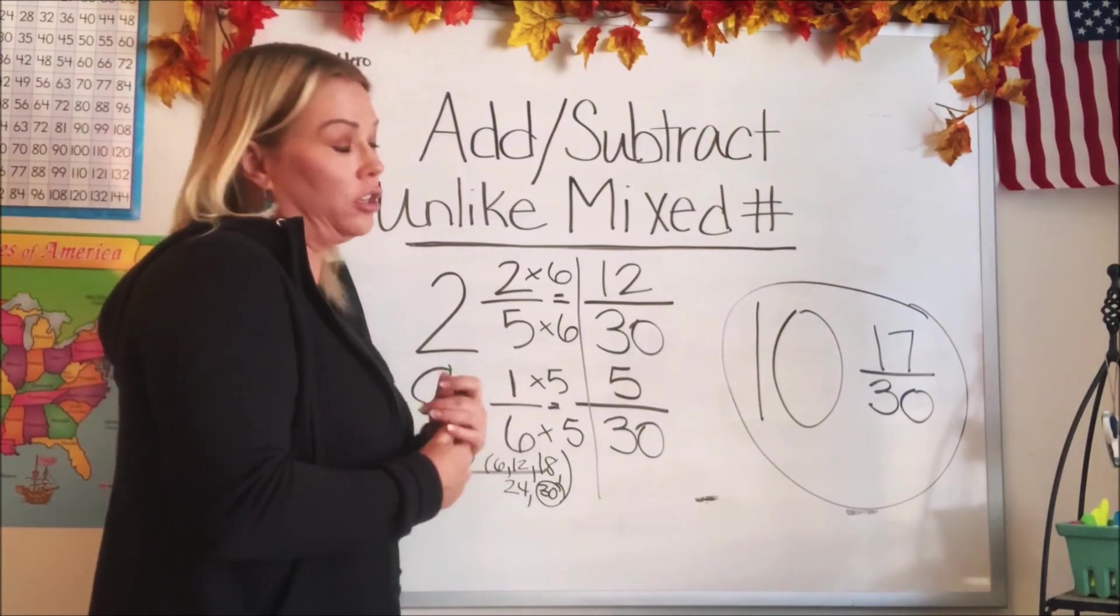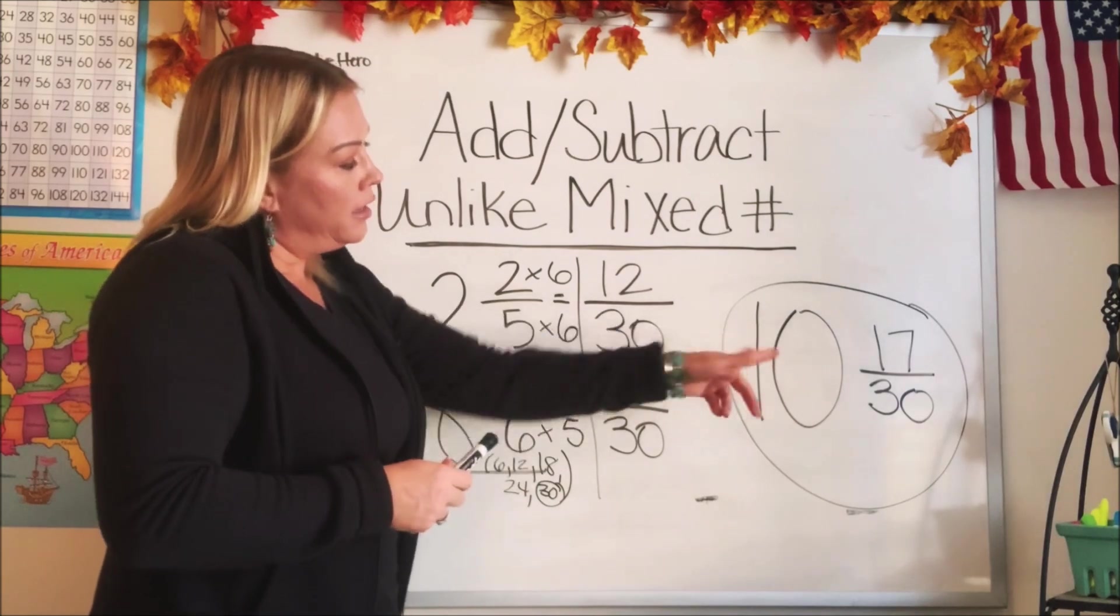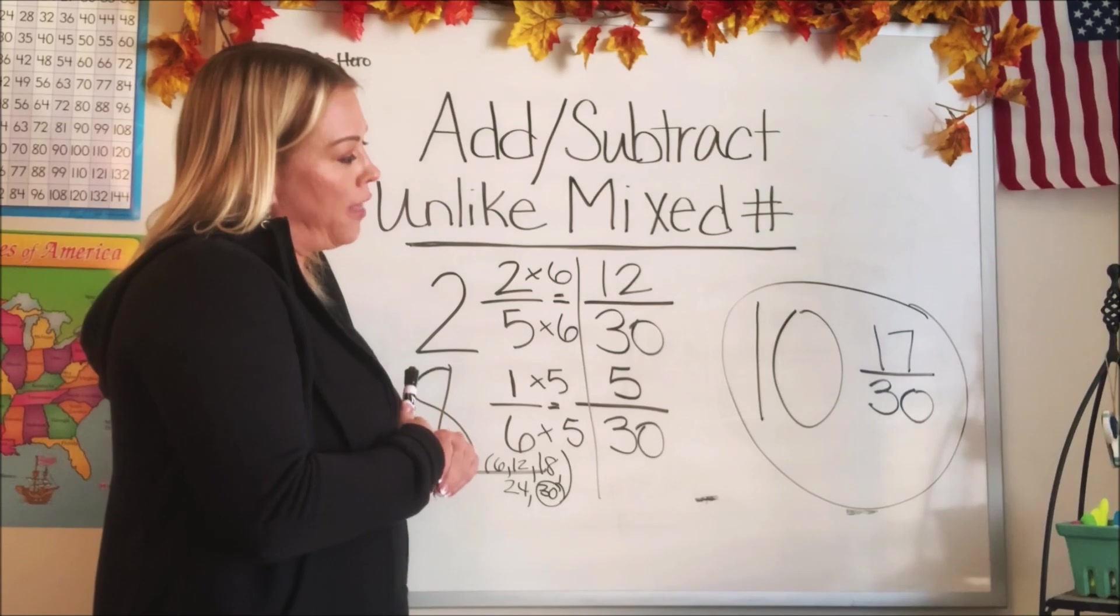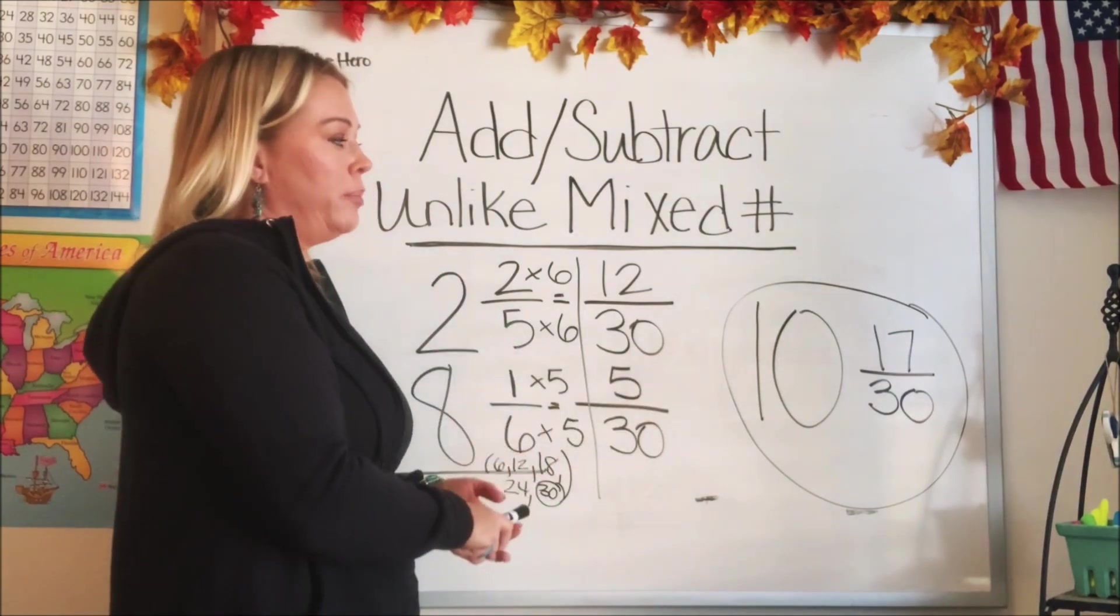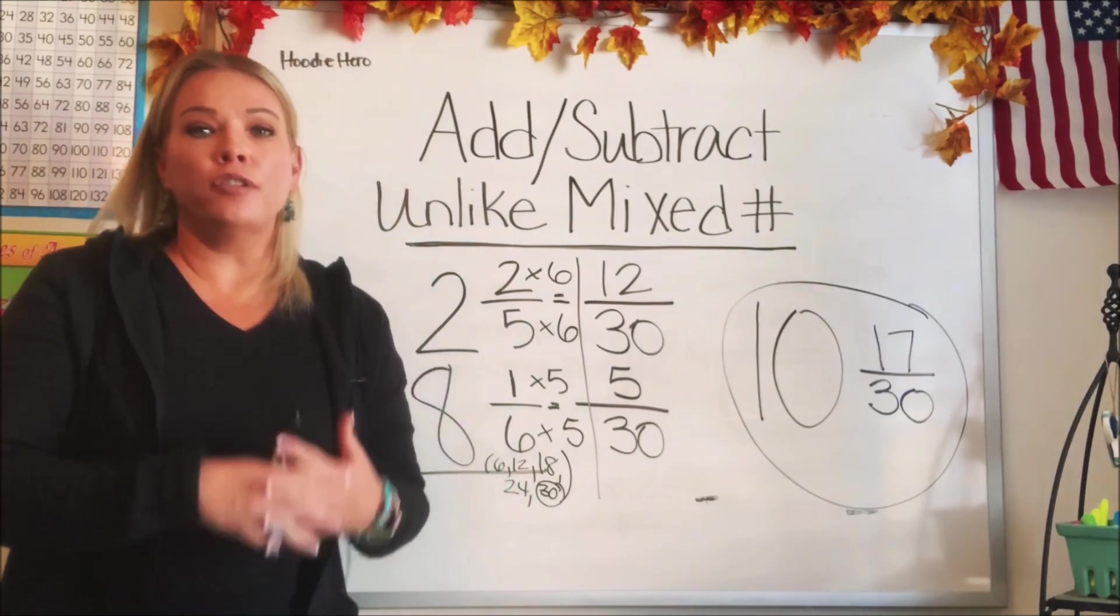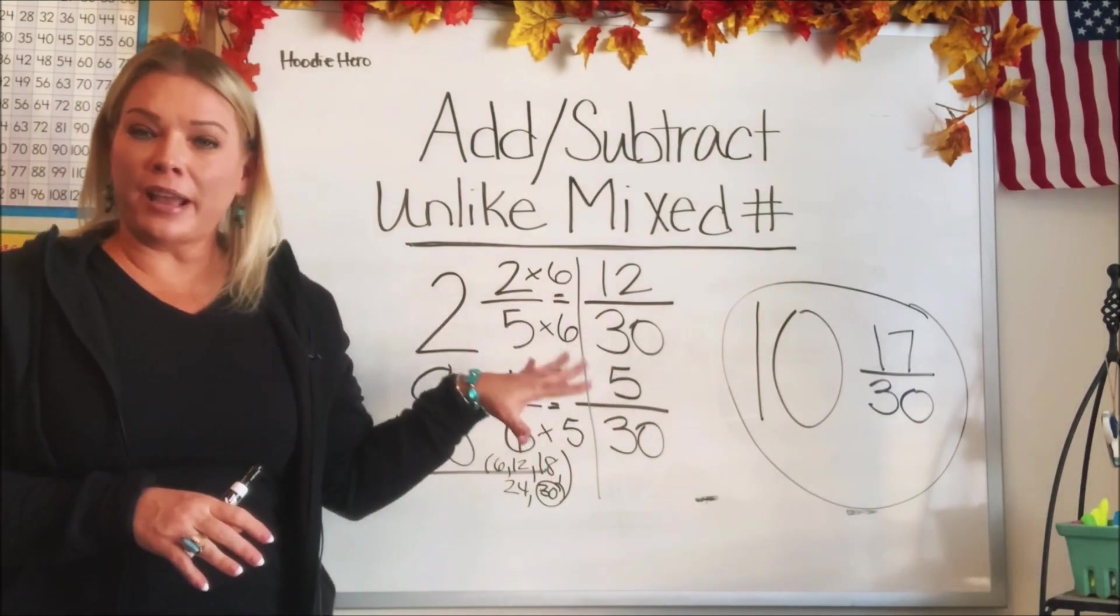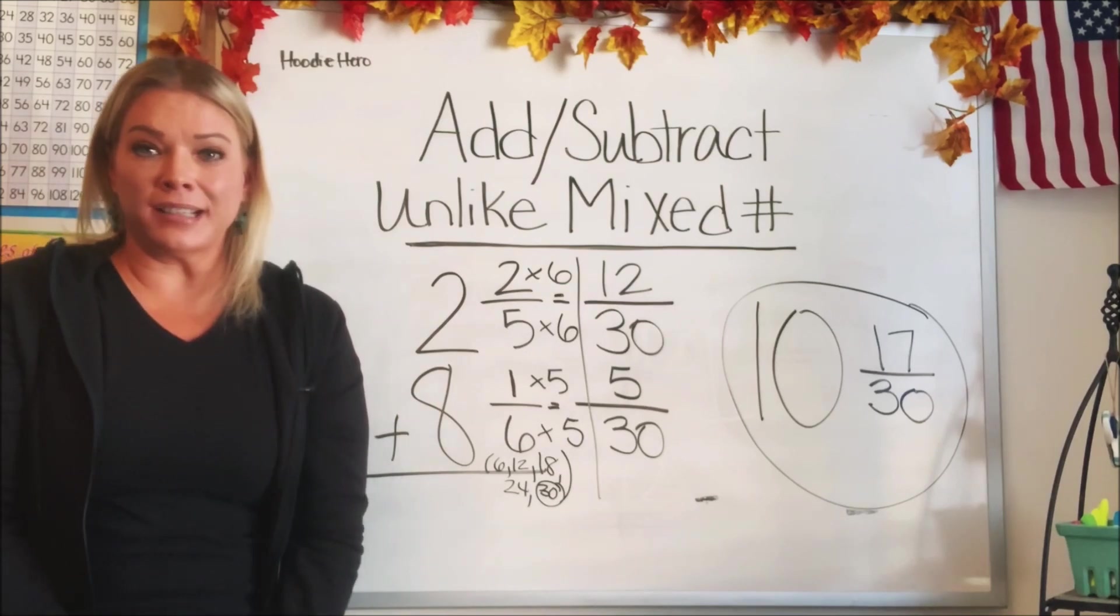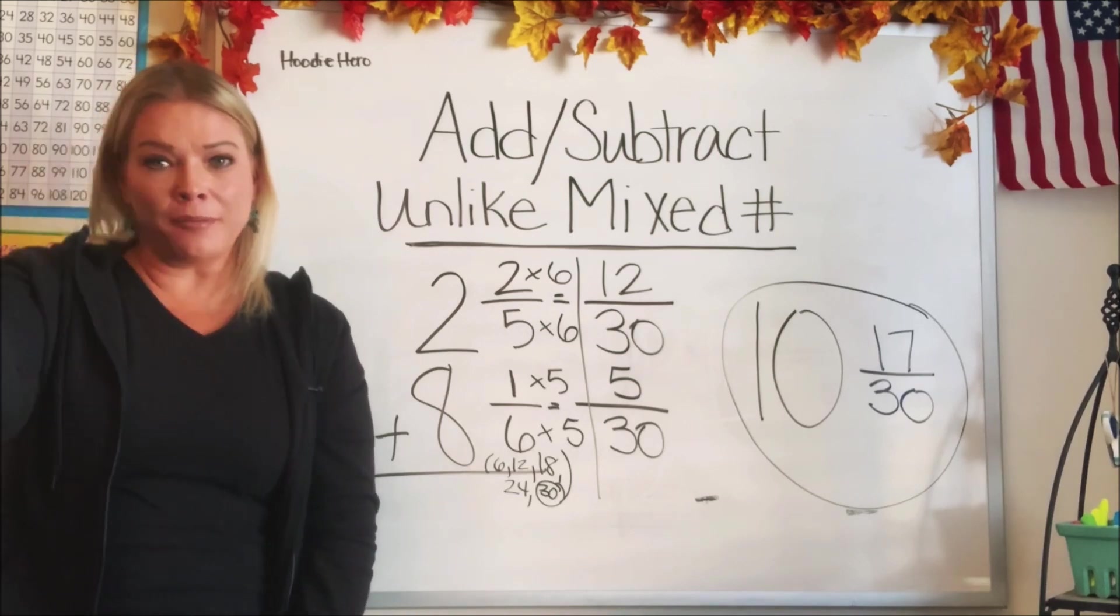Now you do need to check to see if you can simplify. We didn't do that last time because we couldn't simplify, but we should have brought that up. So we at least check 17 over 30. We can't simplify either of those. 17 is a prime number. So that would be the end. And your answer is 10 17/30. It's pretty big. I hope this has helped you review mixed numbers, adding and subtracting, or if it was your first time, I hope it kind of helped you lay a foundation for you to build on as you keep doing exercises. You guys did so great. Have a great day and I'll see you guys next time on Math in a Hoodie.